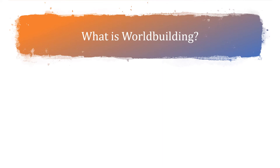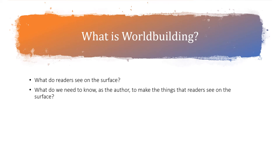Worldbuilding is the process of developing a cohesive world for our speculative or non-speculative work. It is a set of rules we need to define to get people on board with our space opera, our epic fantasy, our grim dystopia — whatever. But I like to break down worldbuilding into three broad parts: what readers envision as they read; what we as the author need to know to make this cohesive world; and finally, how we can use language to reinforce our world.